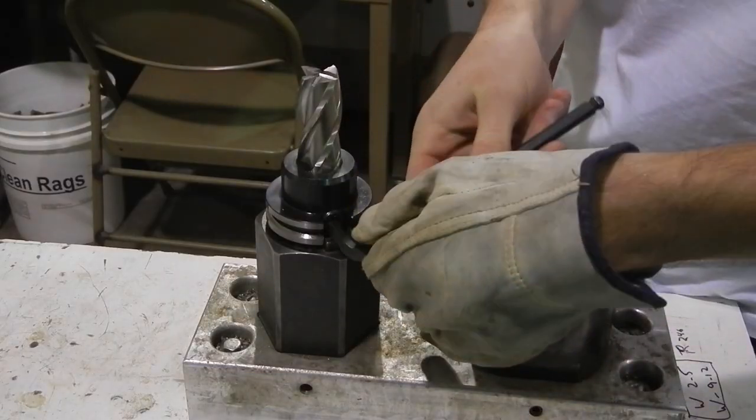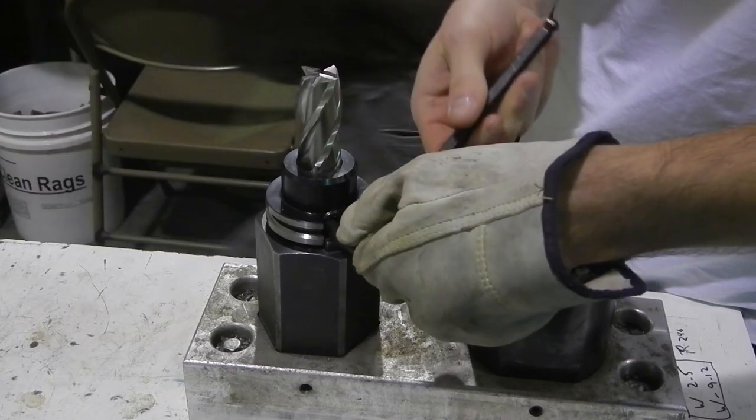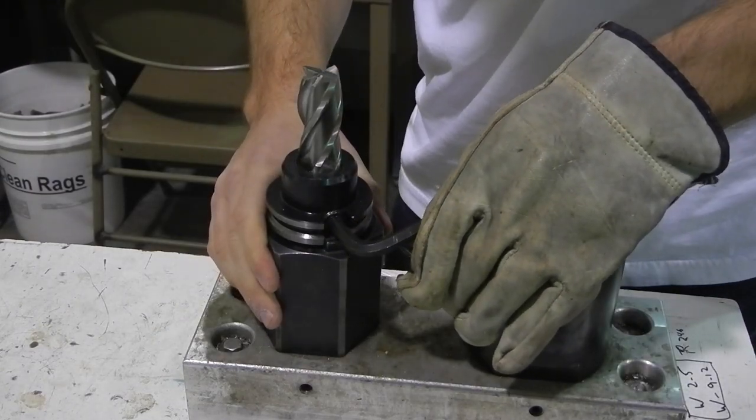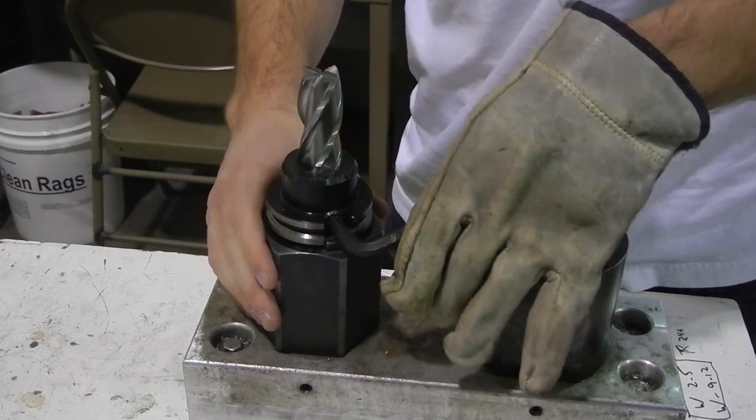When tightening the set screw, think about where your hand would go if it slipped. To avoid injury with the cutting tool, it is generally best to push down and away from the flutes.